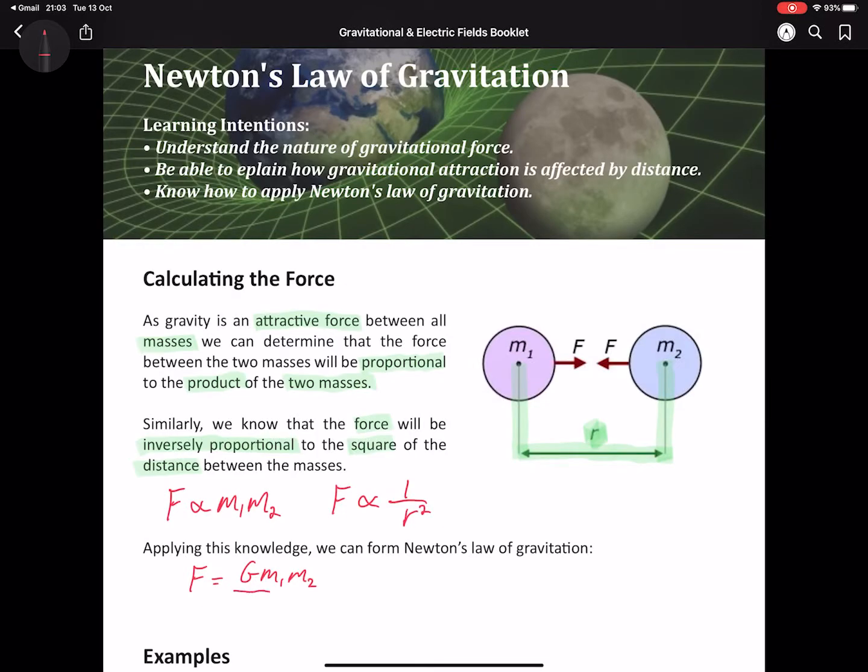This leads us to an easy equation. The force experienced by both masses is equal to G m₁ m₂ over r squared. F is our force in newtons, and as we said, it is the same force experienced by both masses involved.